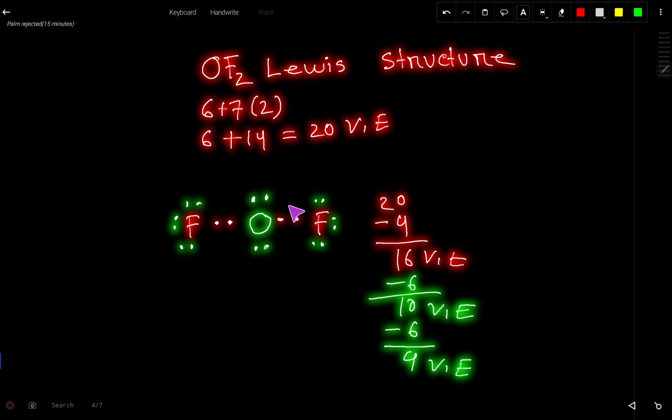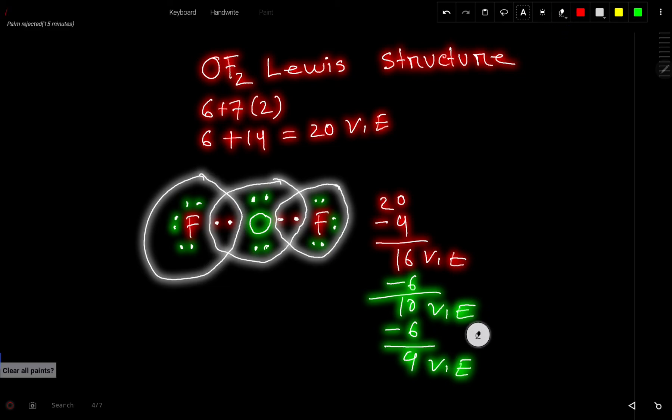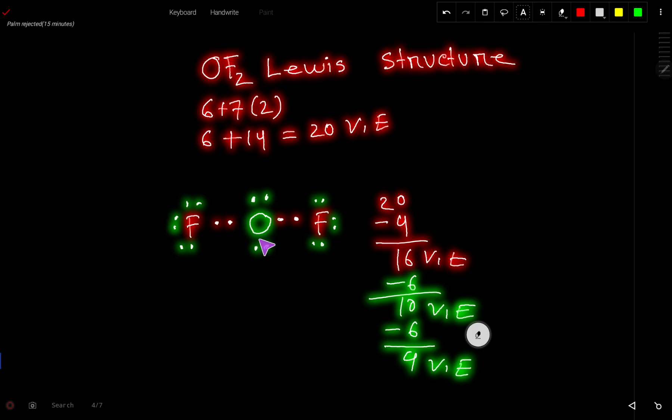Now look, this oxygen has 8 valence electrons. And this fluorine also has 8 valence electrons. And this fluorine also has 8 valence electrons. So we can say that this is the Lewis structure of OF2, oxygen difluoride.